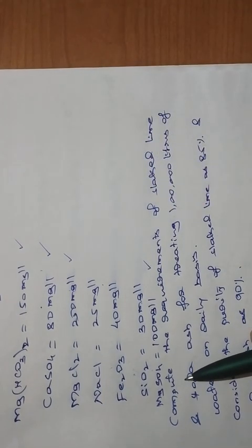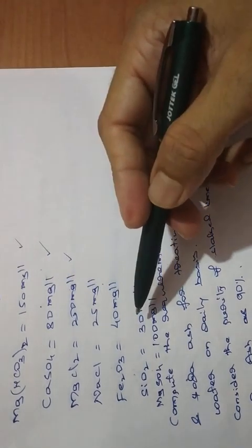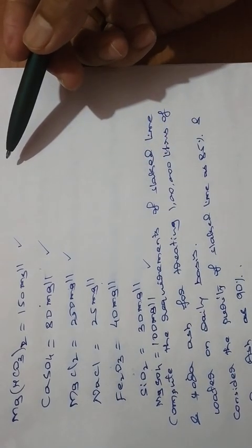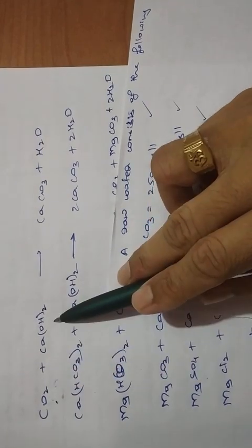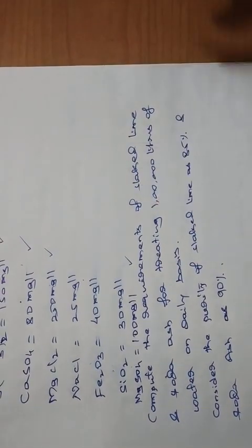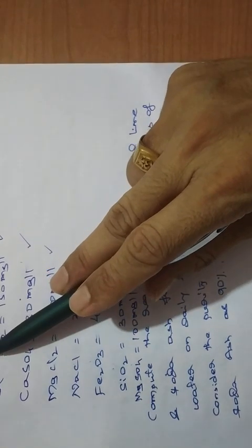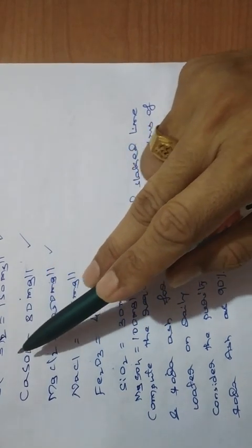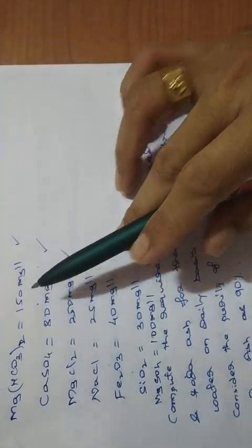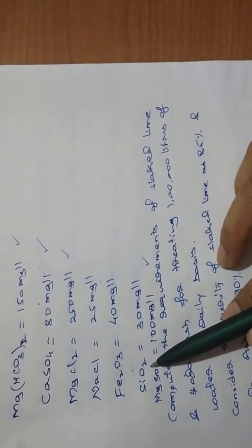Once the characteristics are given, we should identify which ones contribute to hardness. Carbon dioxide is removed by lime. Just to demonstrate, I have considered one problem. The raw water has given characteristics of hardness. Note that NaCl, Fe2O3, and SiO2 are also given, but we will not be considering these for softening.